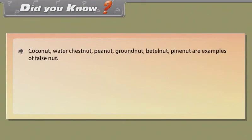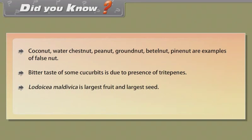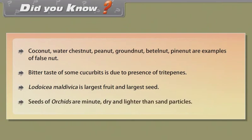Did you know? Coconut water, chestnut, peanut/groundnut, betel nut, and pine nut are examples of false nuts. The bitter taste of some cucurbits is due to the presence of triterpenes. Lodoicea maldivica has the largest fruit and largest seed. Seeds of orchids are minute, dry, and lighter than sand particles.